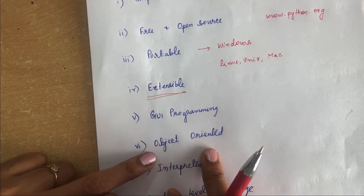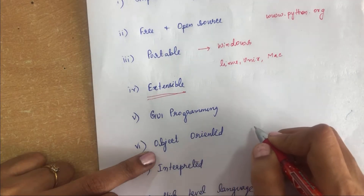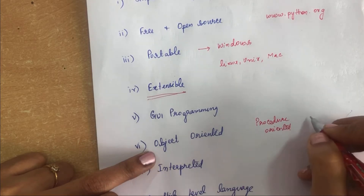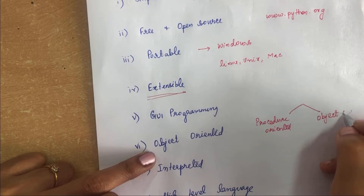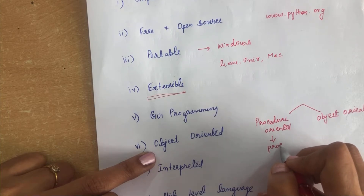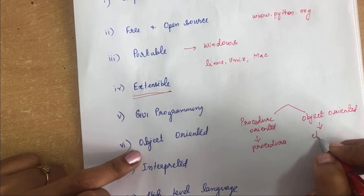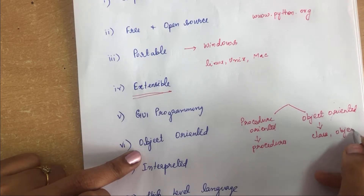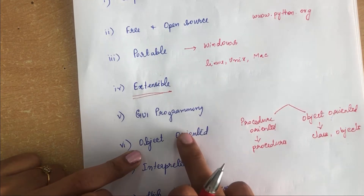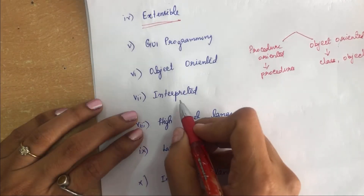Next is object oriented. Python supports both procedure oriented and object oriented programming. In procedure oriented languages, programs are built based on procedures. In object oriented programming, programs are built with classes and objects. Python supports both — procedures, functions, classes, and objects — that is why it is called object oriented.